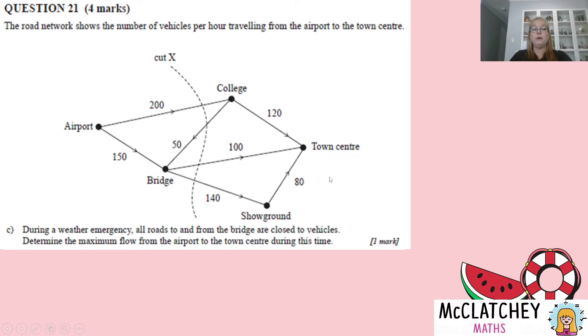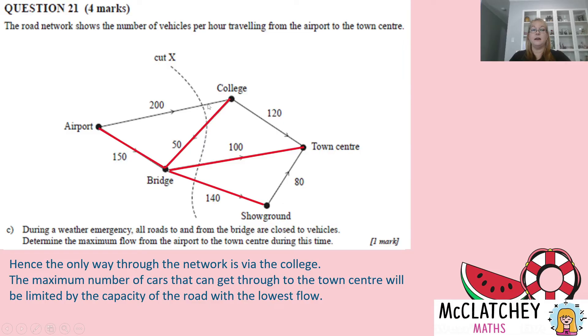Okay, during a weather emergency, all roads to and from the bridge are going to be closed to vehicles because obviously there's been a problem with the bridge of some sort. So determine the maximum flow from the airport to the town centre during this time where the bridge is out. So firstly, that's going to affect all of these roads here. So we're not going to be able to use any of those because if the bridge is out, we can't get on or off the bridge, which means that the only way to get from the airport to the town centre is via the college. Now we're going to be limited in this section here, we might be able to get 200 cars through here, but we're going to have a bottleneck at this point here, we can't get more than 120 cars through that road. So this road here is going to limit this new network. It's going to be the one with the lowest flow. So therefore, we're only going to be able to get a maximum flow of 120 vehicles per hour once this bridge goes out in the weather emergency. And correctly identifying that gives us our next mark.